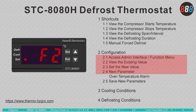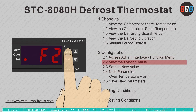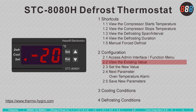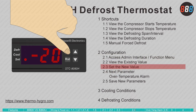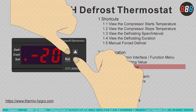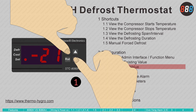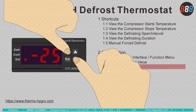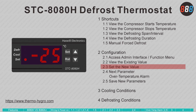Now let's check and change F2. Press the Set key once to view the existing value. Then press and hold the Set key — without releasing — and press the Down key to change the value. You may change other parameters the same way.